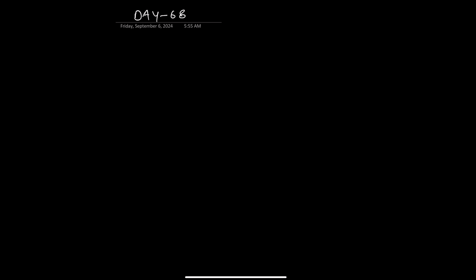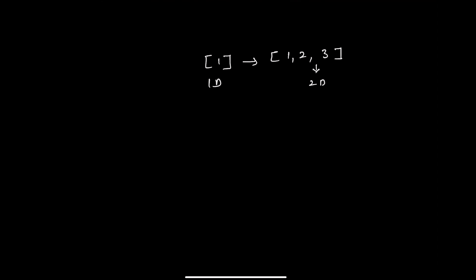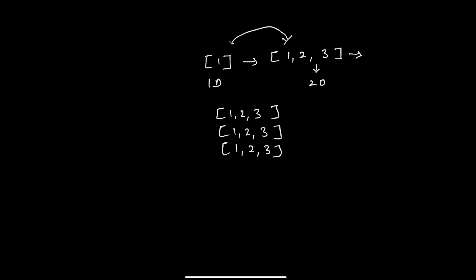First of all let me tell you what a matrix is. A matrix is a 2D array of scalars with one or more columns and one or more rows. We know that a 1D array, when we combine multiple 1D arrays, becomes a 2D array. And when we combine multiple 2D arrays it becomes a 3D array — for example, 1 2 3, 1 2 3, and 1 2 3.